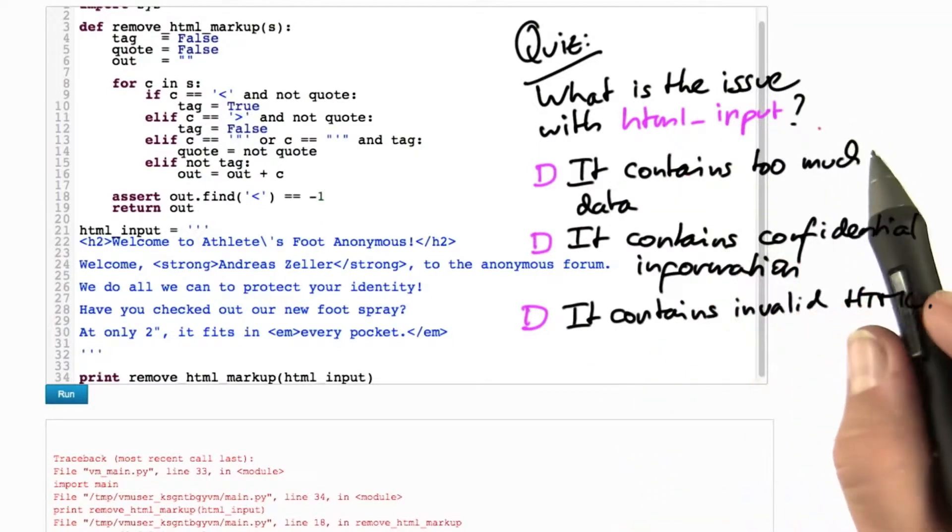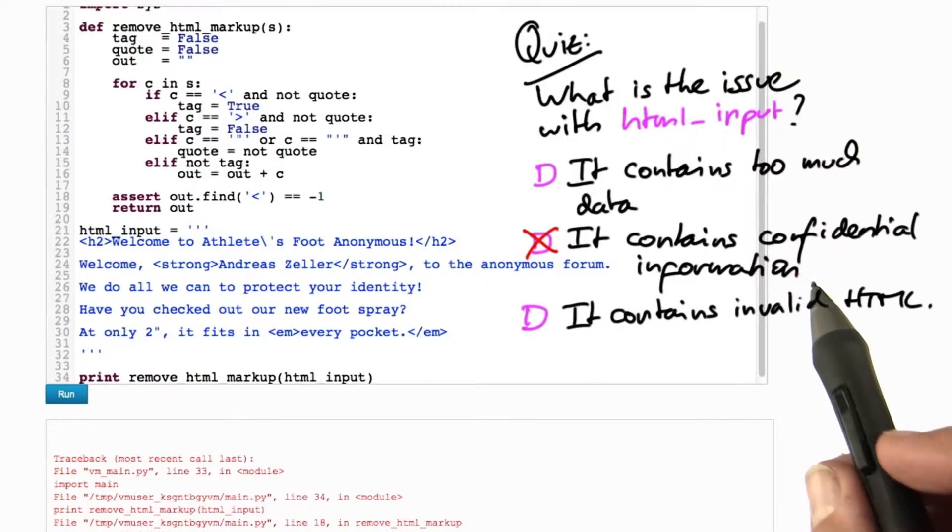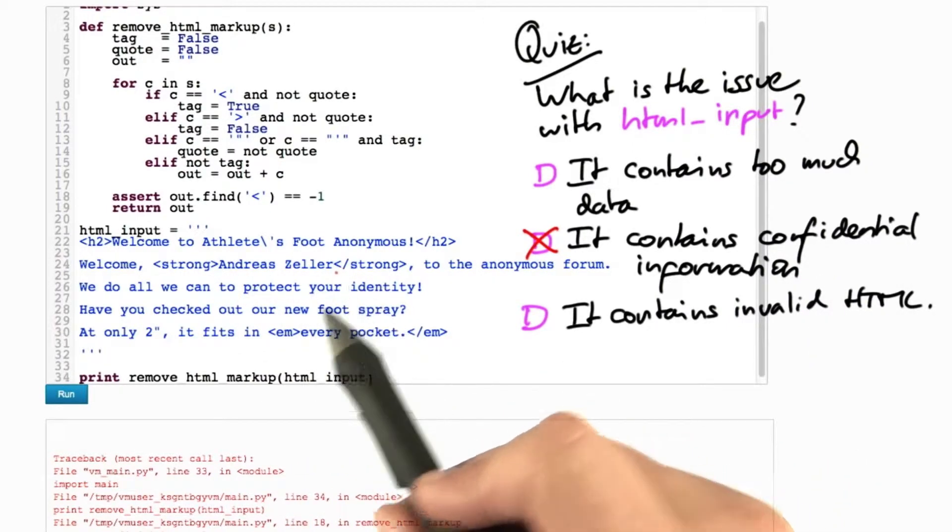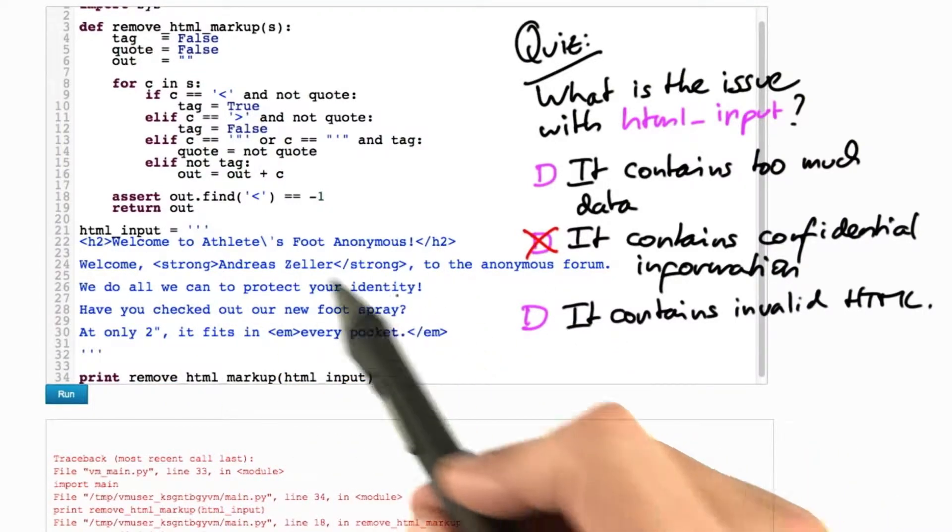Well, now for the answer. The issue with HTML input, of course, is that it contains confidential information. We really don't want the entire world to know who we are and which websites we visit. So we have seen that there is indeed confidential information in here.